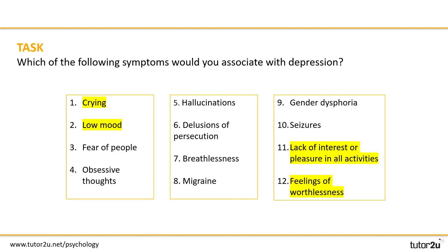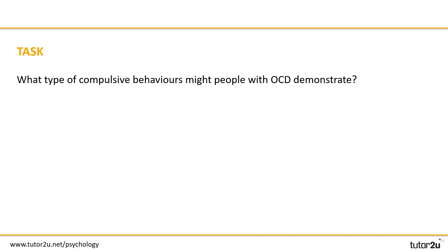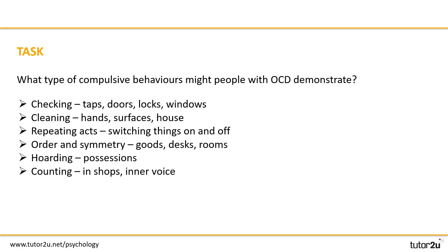Well done if you got those correct. What about OCD? What type of compulsive behaviors might people with OCD demonstrate? Pause the video for two minutes while you jot some examples down. Here are some examples — if you didn't get any of these, add them to your list. Typical compulsive behaviors include: checking, cleaning, repeating acts, order and symmetry, obsessive hoarding, and counting. Well done if you got any of those.